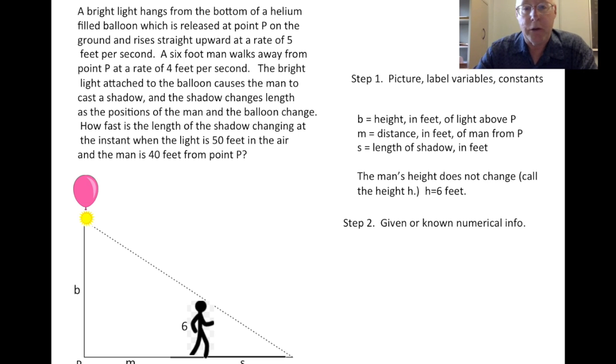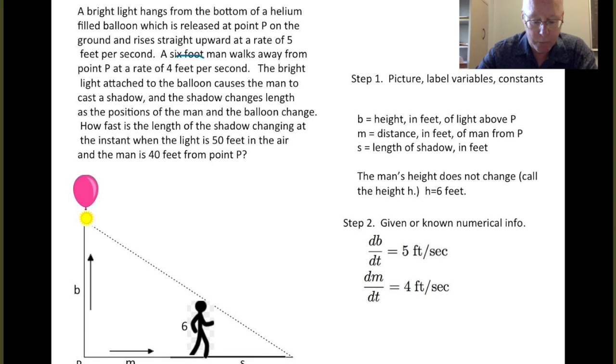Now we read the problem again looking for numerical information. And this is often information on how fast some quantities are changing. So in this problem, again, the balloon is going up. That means that B is getting bigger. B is increasing. And we're told the rate of increase. We're told the balloon is rising at a rate of five feet per second. So that means B is getting longer at that rate. And so we give B, which is a function of t as usual. We give it a derivative dB/dt of five feet per second. The other information we're given is how fast the man is walking from the light. That tells us how fast M is changing, where M is the distance from the point P to the man. And again, as you read through the problem, you see that is given by four feet per second.